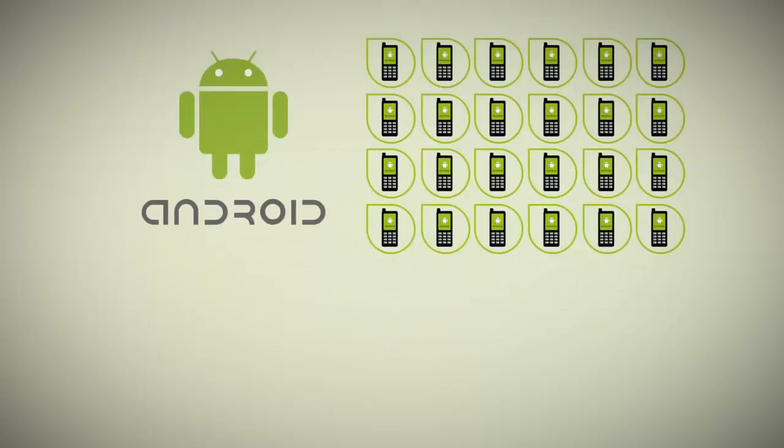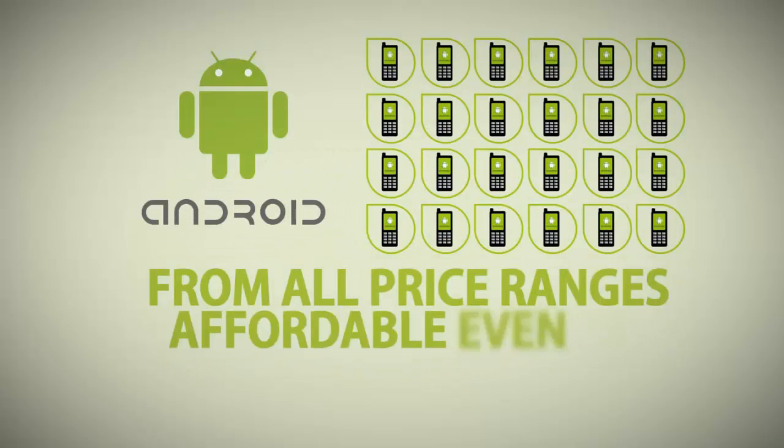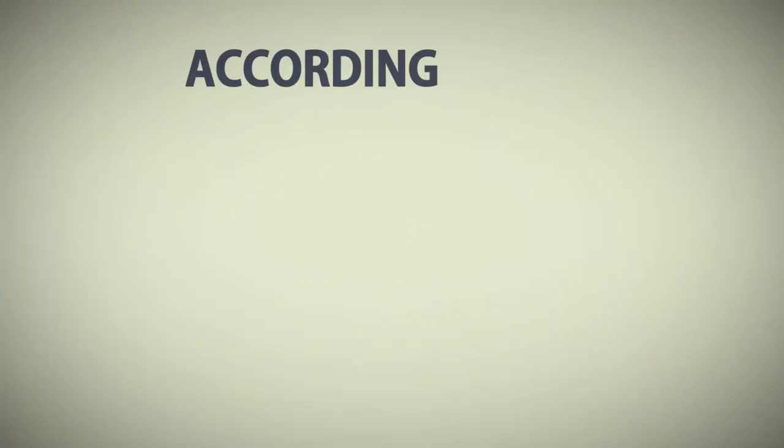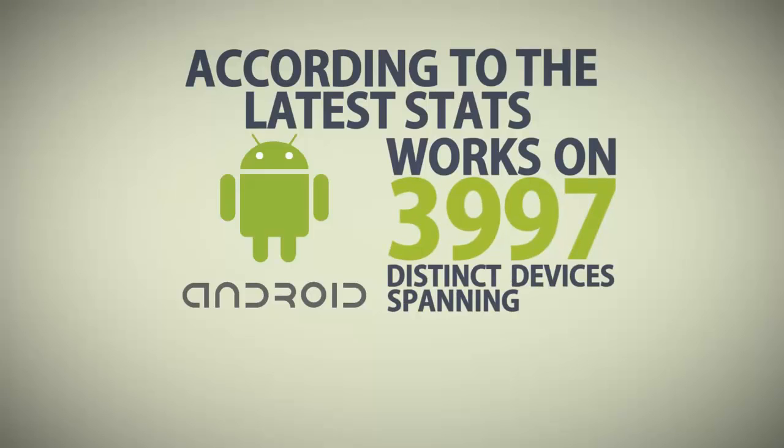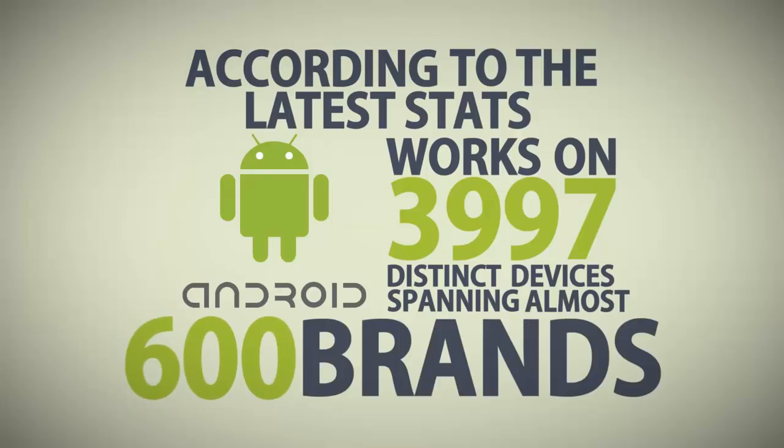While on Android, you can have thousands of supported phones from all price ranges, affordable even to small guys! According to the latest stats, Android works on 3,997 distinct devices, spanning almost 600 brands! This is where the real market is!